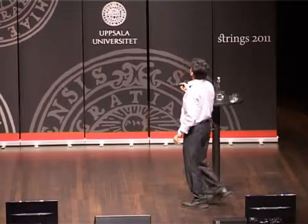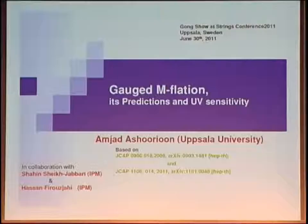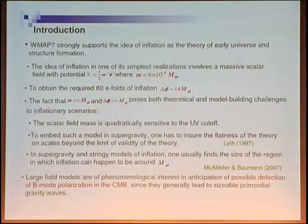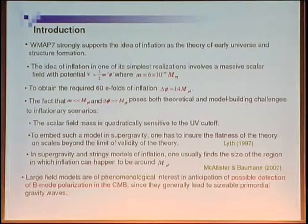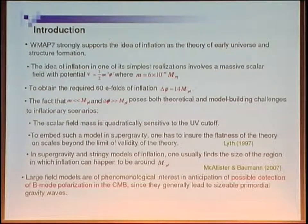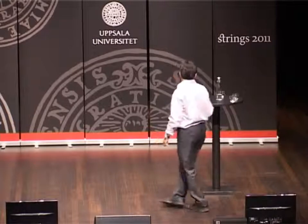I'm going to talk about gauge inflation, work in collaboration with Shaheen Shashapari and Hassan Firouz-Jahy. Large field models are of phenomenological interest in anticipation of possible detection of B-mode polarization in the CMB. In its simplest realization, it involves a massive scalar field with mass of order 10^-6 M_Planck, and displacement of the field should be around 14 M_Planck to get 60 folds of inflation. These values pose both theoretical and model-building challenges for inflationary scenarios.